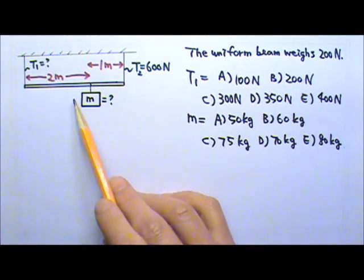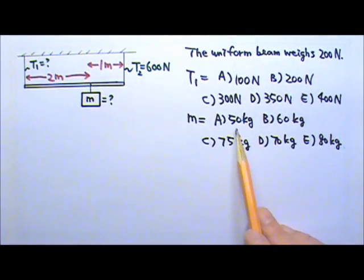What is the mass of the box? 50 kg, 60 kg, 75 kg, 70 kg, or 80 kg.